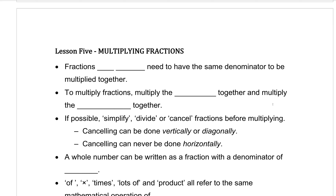Let's fill in our blanks. Fractions do NOT need the same denominator when multiplying — you can even write 'not' in capital letters so you don't forget it. You do not need to have the same denominator to multiply fractions. To multiply fractions, all you need to do is multiply the numerators together and multiply the denominators together.